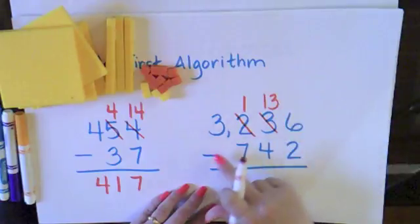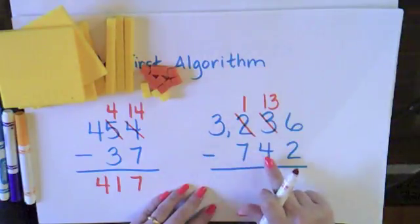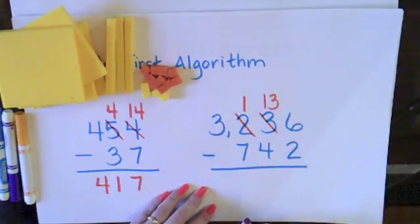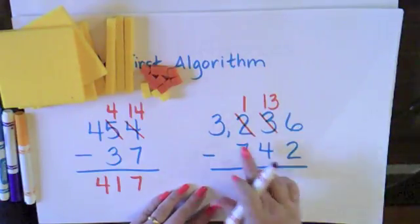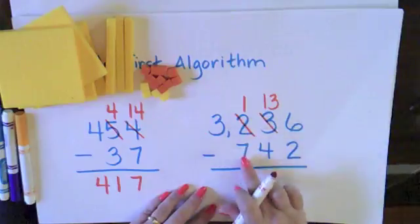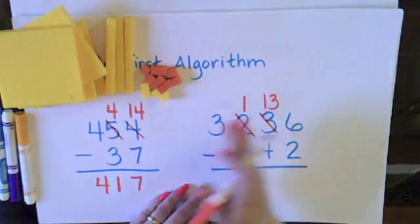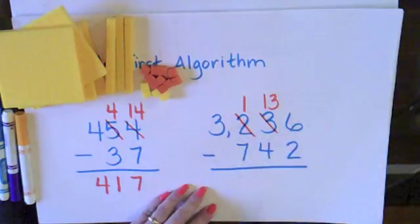Now I can note: 13 10s take away 4 10s. I need to move to my 100s place, because I want to do all the trading before I actually do my subtraction.